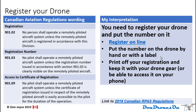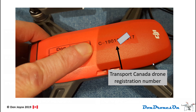I'll show you a picture of mine on the next page. Do print off your registration email and keep it with your drone gear, or at least be able to access it on your phone. If you have my logbook, you can enter it there and have it all in one spot. Here's my Spark drone with the registration number on a simple label made with a label maker.